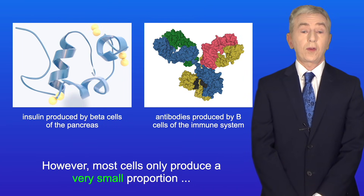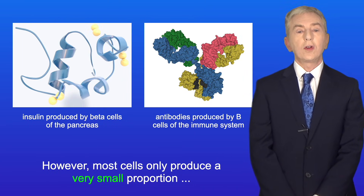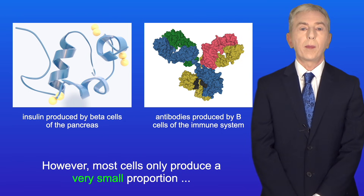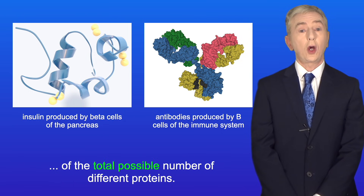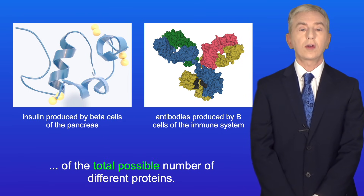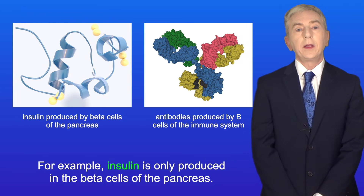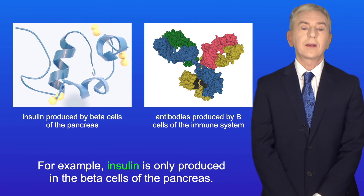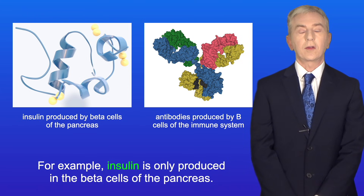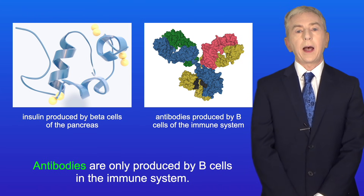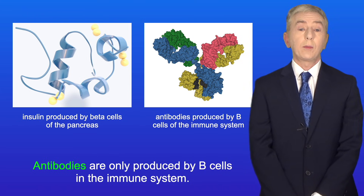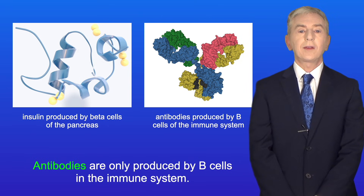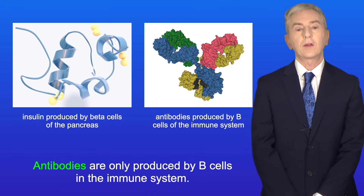However most cells only produce a very small proportion of the total possible number of different proteins. For example insulin is only produced in the beta cells of the pancreas and antibodies are only produced by B cells in the immune system.